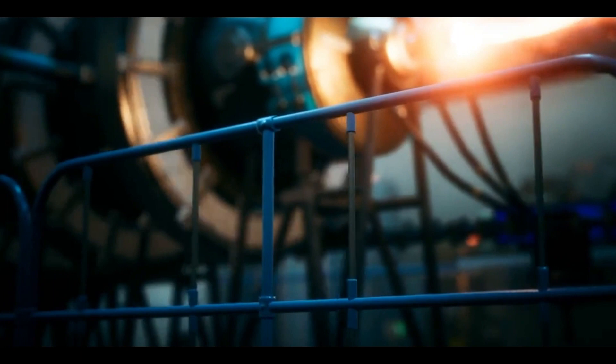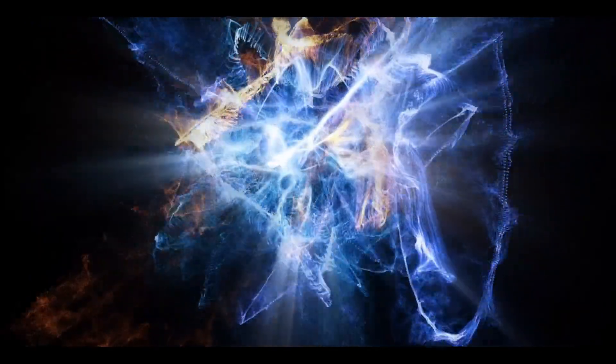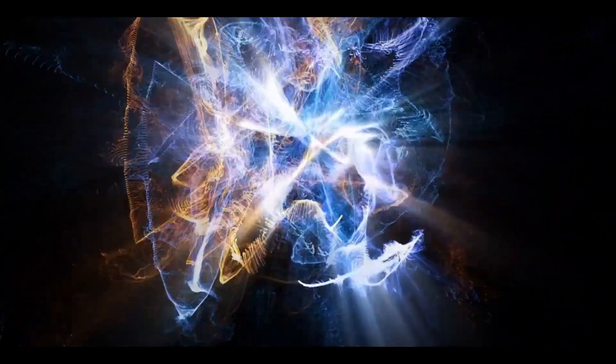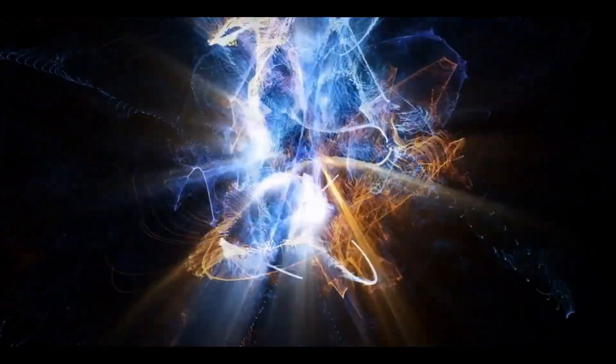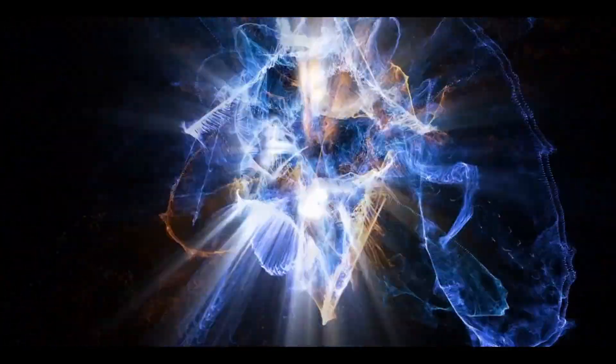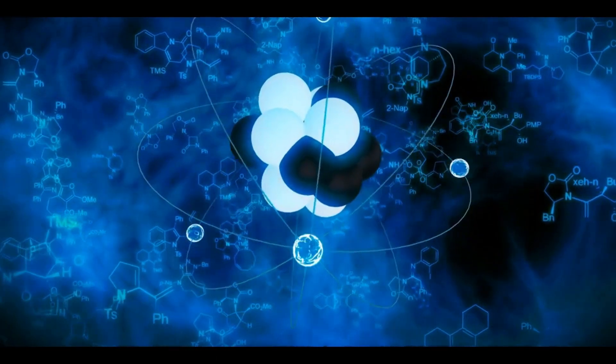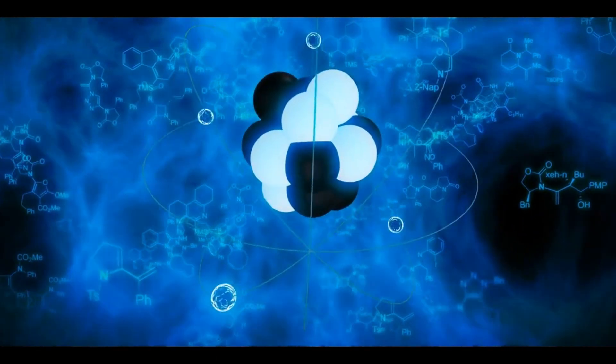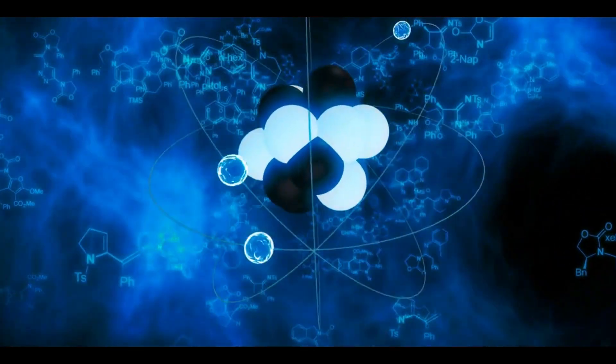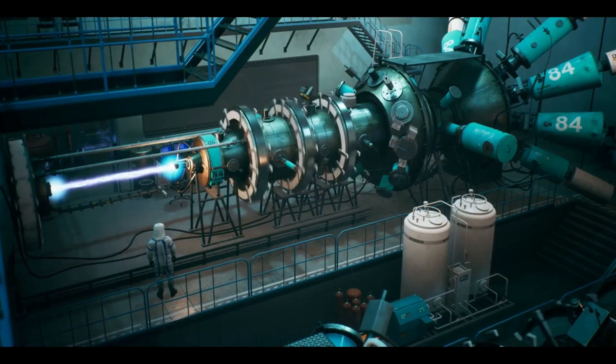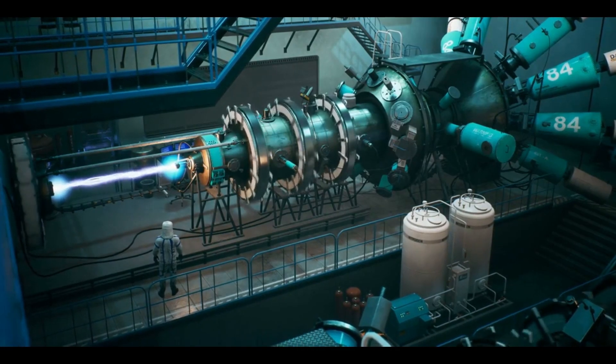At CERN, scientists smash protons together at very high speeds, creating many other particles. Among them are antiprotons, which are the antimatter version of protons. These antiprotons are then collected and slowed down by a machine called the antiproton decelerator, which is the only place making antimatter in the world.